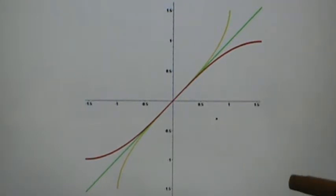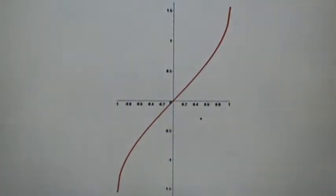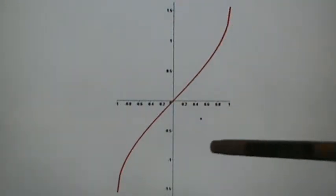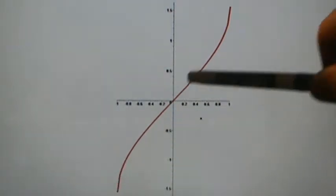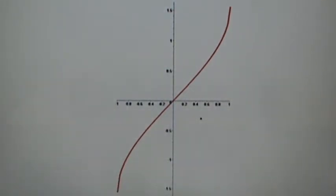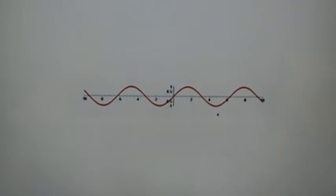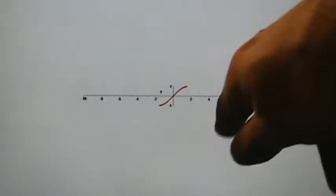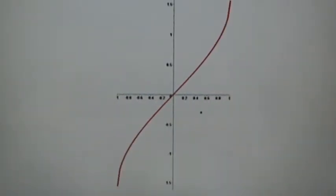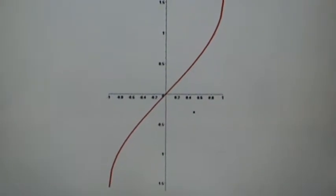This here is the graph of the inverse sine function, and that's the entire thing. It doesn't extend farther down or farther up — that's the whole thing. From x equals negative 1 to positive 1 and from y equals negative pi over 2 to positive pi over 2. This is the point negative 1 comma negative pi over 2 and it goes all the way up to the point positive 1 comma positive pi over 2. The reason it's only this piece is because we restricted the domain of the sine function, so we can only use this piece to define the inverse function.